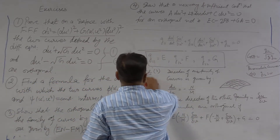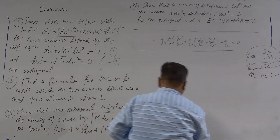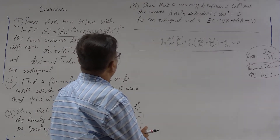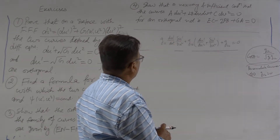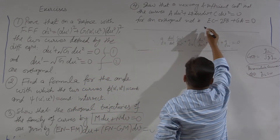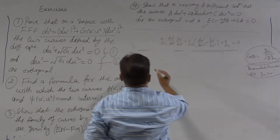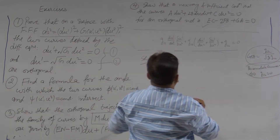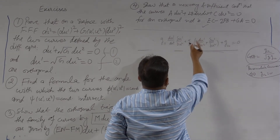Now move on to the last one. Show that a necessary and sufficient condition that the curves — this is the differential equation for curves — form an orthogonal net, meaning the two families are orthogonal to each other, if and only if this condition is satisfied. What I will do is rewrite the differential equation. So this is the solution for problem number 4. I will divide by dv².